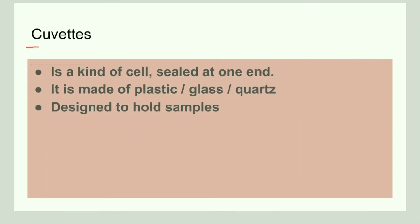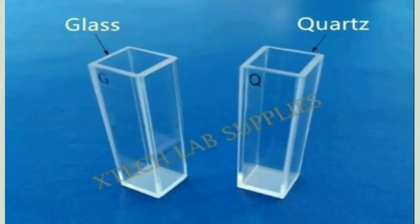Next, we will discuss cuvettes. Cuvettes are a kind of cell that are sealed at one end and open at the other end, and they hold the samples. Cuvettes can be made of plastic, glass, or quartz. They are designed specifically to hold samples and are open at one end and closed at the other.